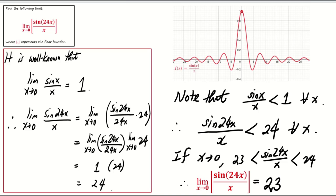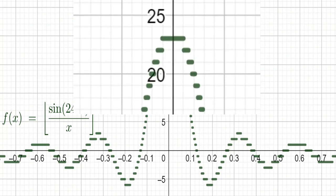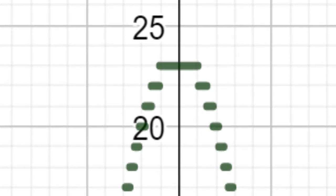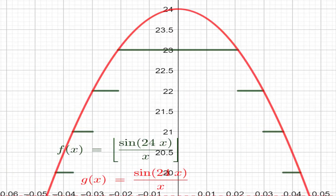To visualize it, consider the graph of the floor of sine 24x over x. It clearly shows that the limit as x tends to 0 is 23. Comparing this graph with that of y equals sine 24x over x further clarifies this. Here is a zoomed in version for better clarity.